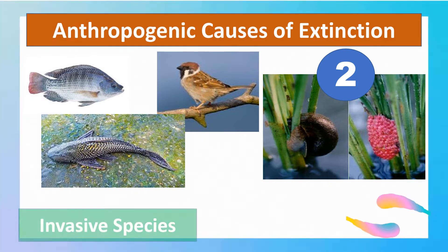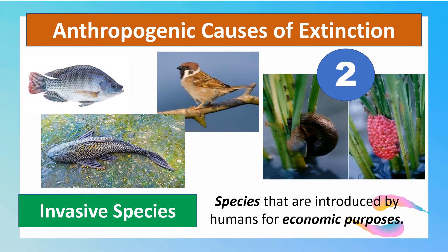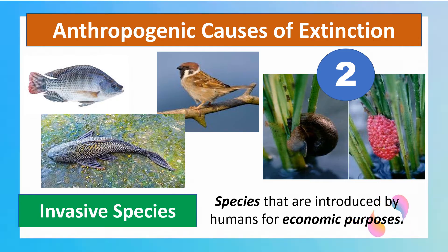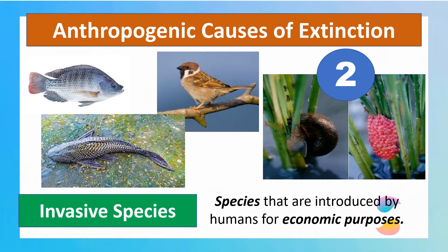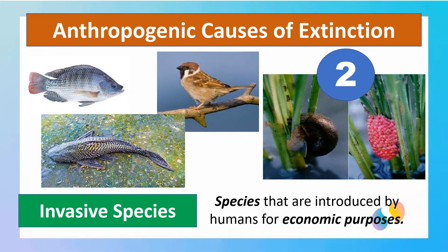Next, we have invasive species — plants and animals introduced by humans for economic purposes. An example is tilapia: the tilapia fish is not a native species in the country but was imported during the early 1970s as a government response to food shortage. Other examples are the janitor fish and the golden kuhol. The golden apple snail, or golden kuhol, was placed in rice fields during the 1980s as a response to food shortage, but later reproduced so quickly and created a devastating effect in rice fields as a pest.